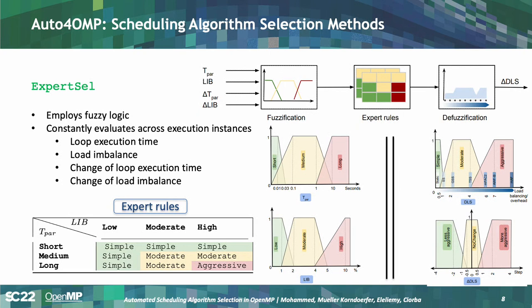Here we can see the fuzzy sets for the scheduling algorithms, where we lay our algorithm portfolio across these sets and see how techniques belong to different sets. In the defuzzification phase, we translate these simple rules into a decision about which technique to use, and how to change the scheduling algorithm from one iteration to another. For example, if load imbalance is increasing and execution time is also increasing, we may switch to a more aggressive scheduling algorithm to improve performance.